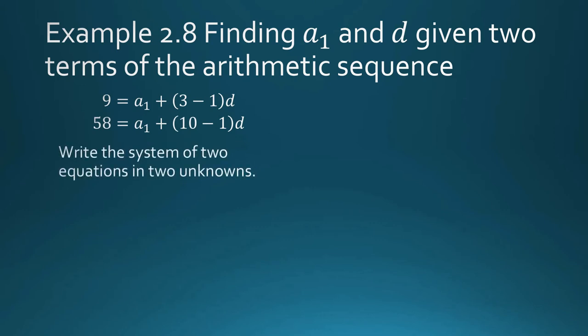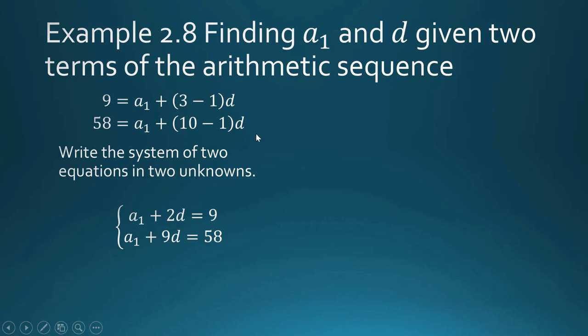We write our system of two equations in two unknowns — it looks clean and simple. Three minus one is two, ten minus one is nine, so we simplified to: 9 = a sub 1 + 2d and 58 = a sub 1 + 9d. We have three methods to solve a system: substitution, elimination, and graphical. It's easiest to solve this through elimination.